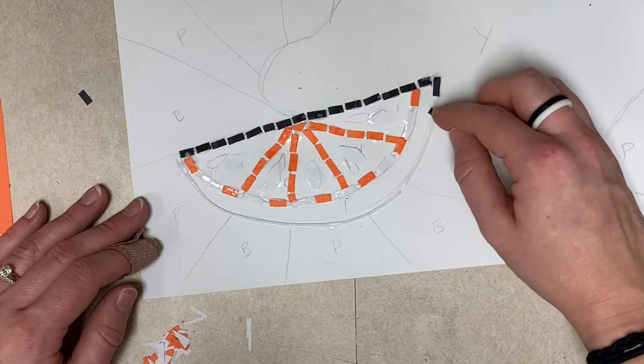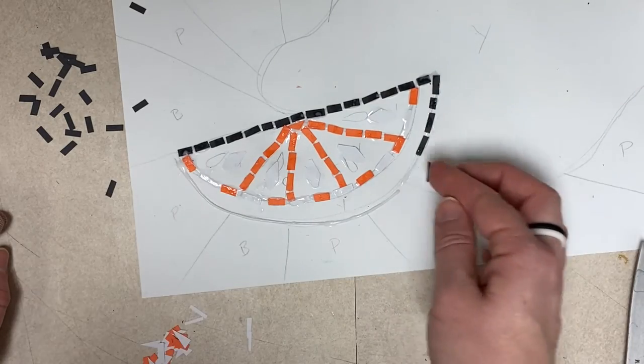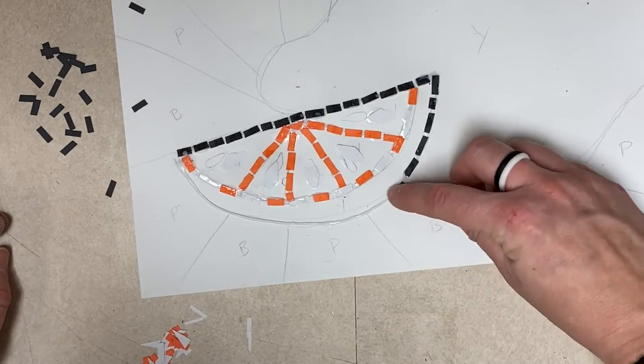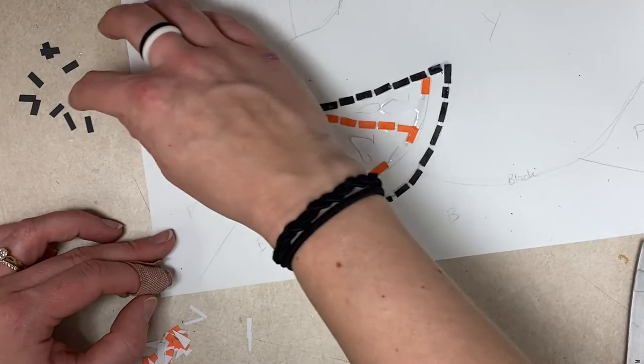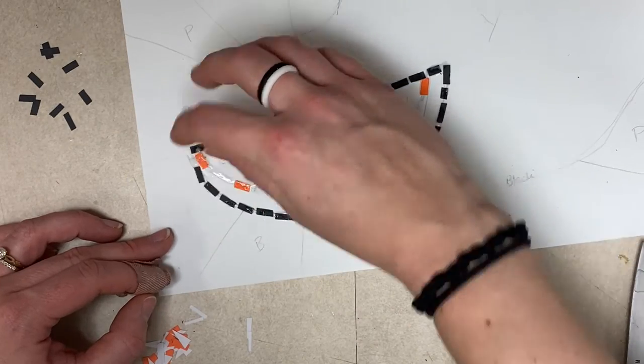I'm going to do the rest of my outline though in the black, because then it kind of ties together and really creates a proper outline, and then that way it'll match also the larger lemon as well.